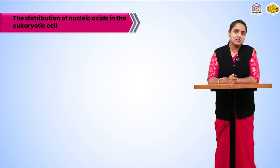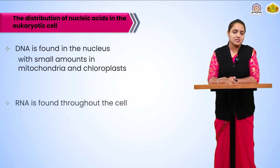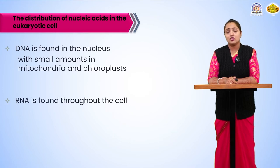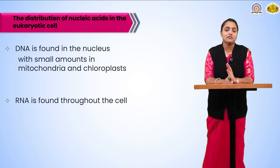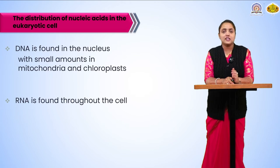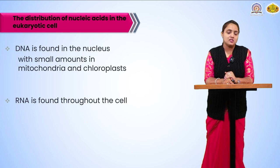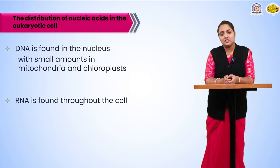Now we are going to see the distribution of nucleic acid in the eukaryotic cell. DNA is found in the nucleus with very small amounts in the mitochondria and the chloroplast, while RNA is found throughout the cell because the various types of RNA are included in protein synthesis. The translation process requires three types of RNA: mRNA, rRNA, and tRNA, so RNA must be present throughout the cell.